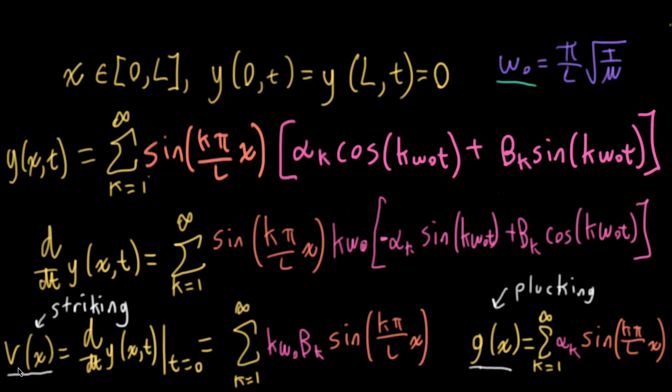So if we set the velocity initial condition to zero and set G to something, that corresponds to plucking the string. And G corresponds to the initial shape at T equals zero when the pick leaves the guitar string. And if we were to set G equal to zero and set V to something, that represents striking the string, say, with a piano hammer.